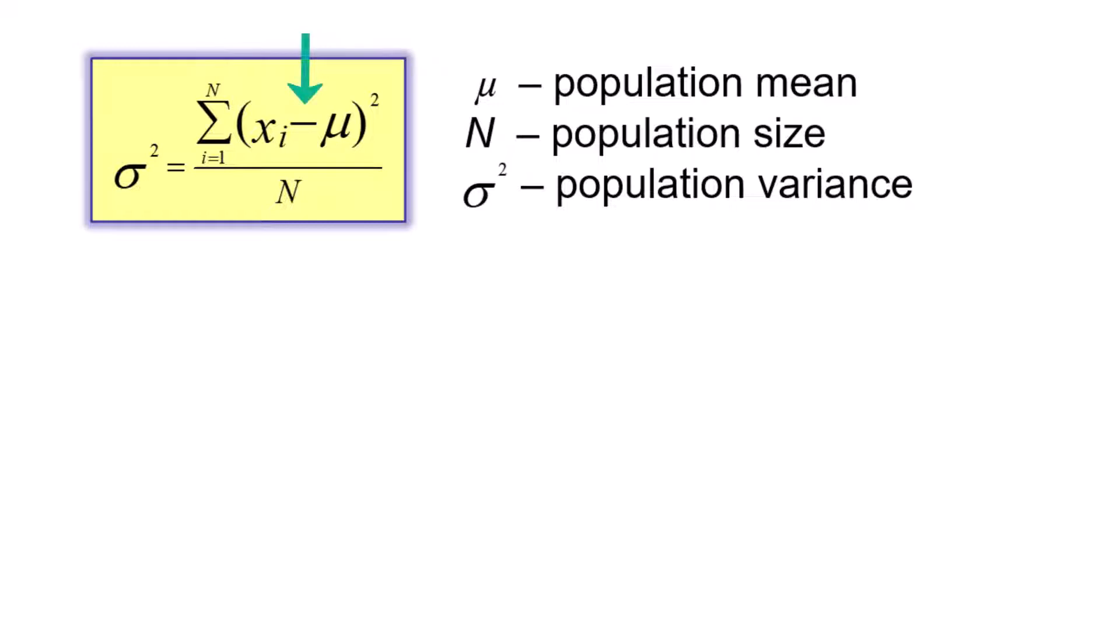So what you're going to do in the formula is we're going to take each of our x's or the values that we're working with and then we're going to subtract them from the mean. Then each of those values, we'll square them. And then for each of those, we'll add them all up and then we're going to divide by the population size.